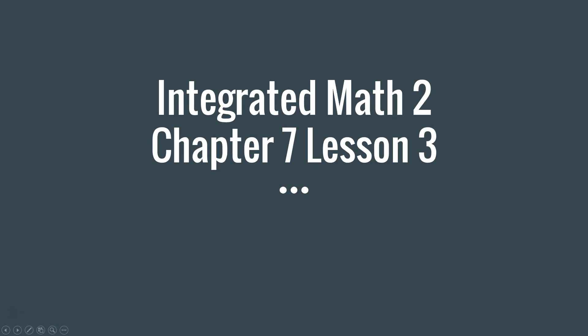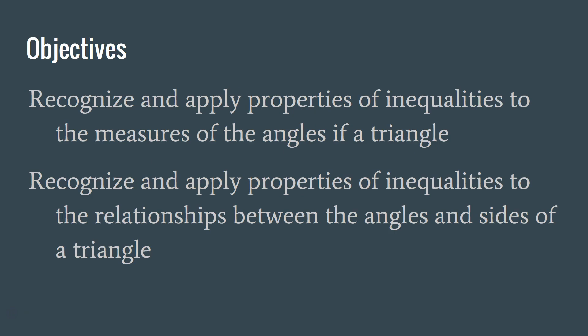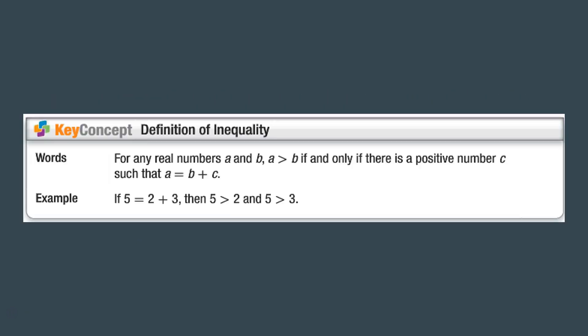Hi everyone, today in Integrated Math 2 we're going to go over Chapter 7, Lesson 3. Here are the objectives - make sure you write them down in your notes. So the definition of inequality: for any real numbers a and b, a is greater than b if and only if there is a positive number c such that a is equal to b plus c.